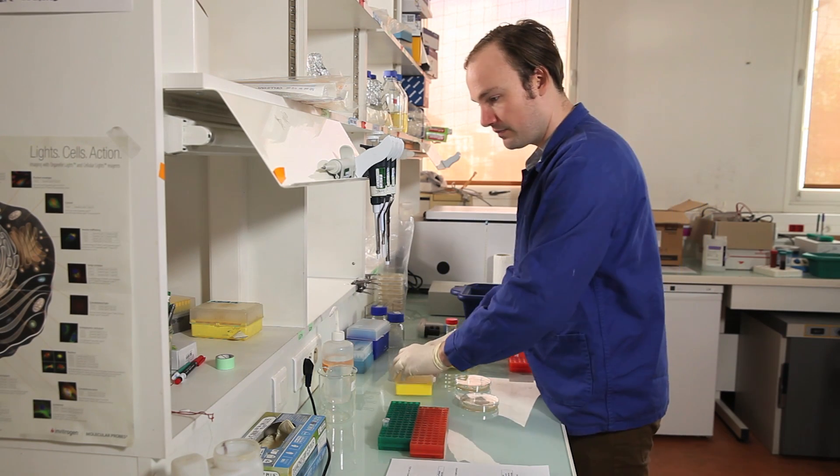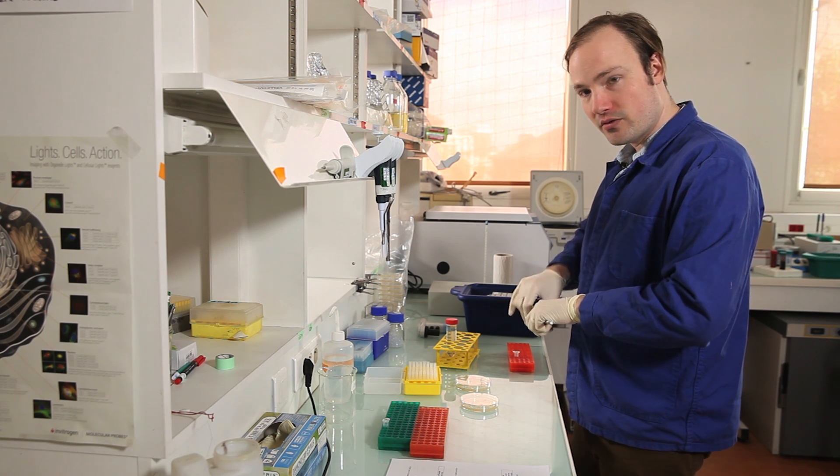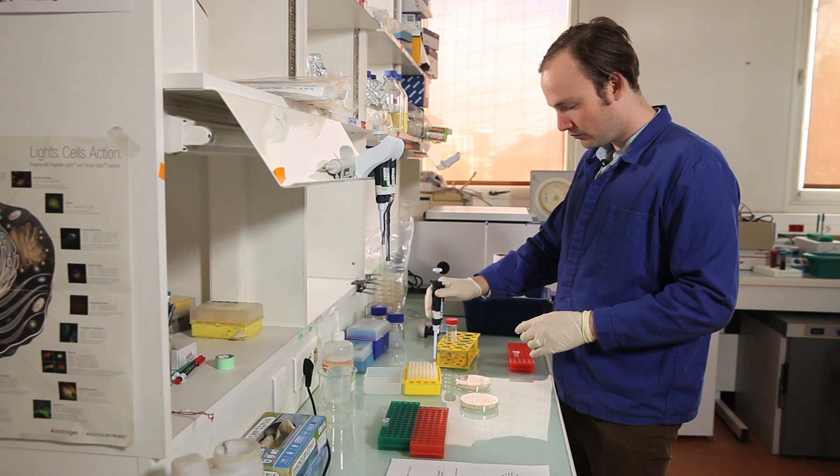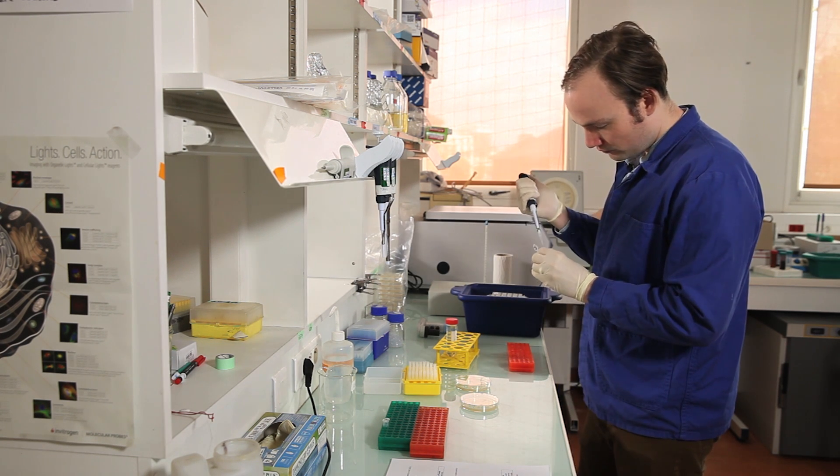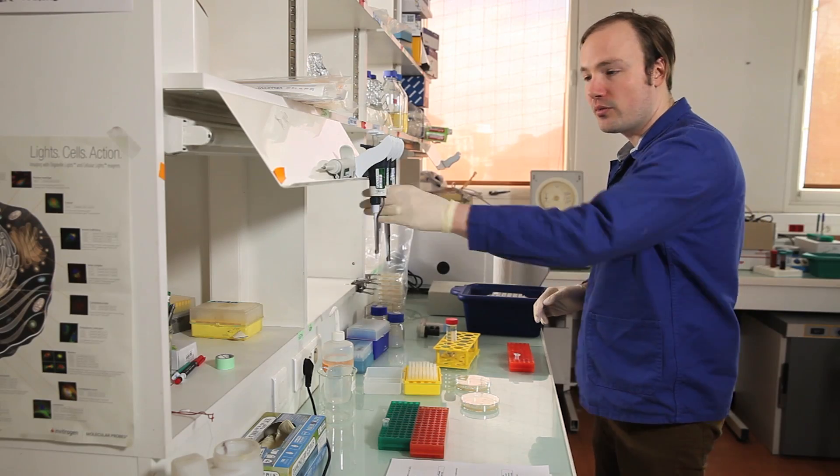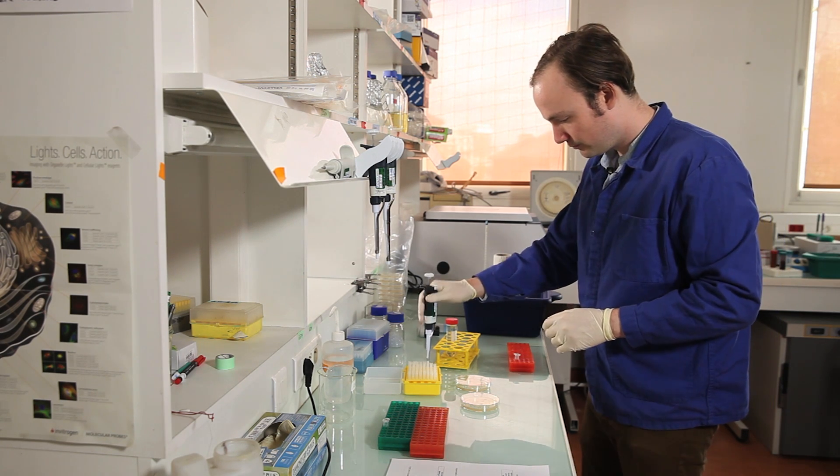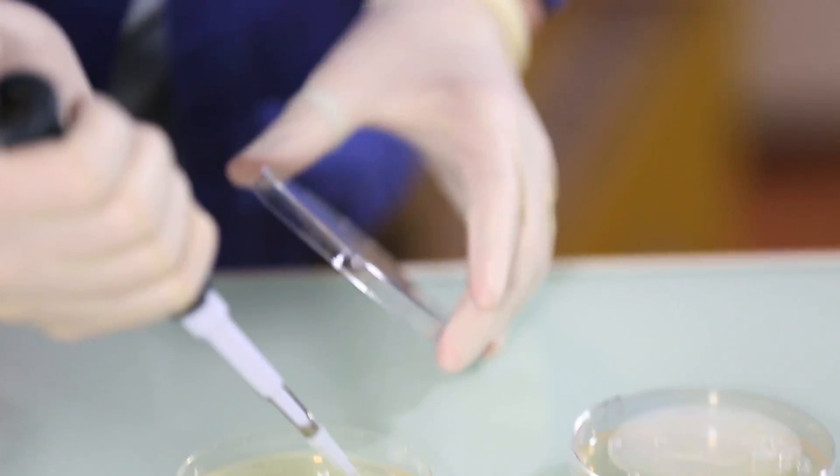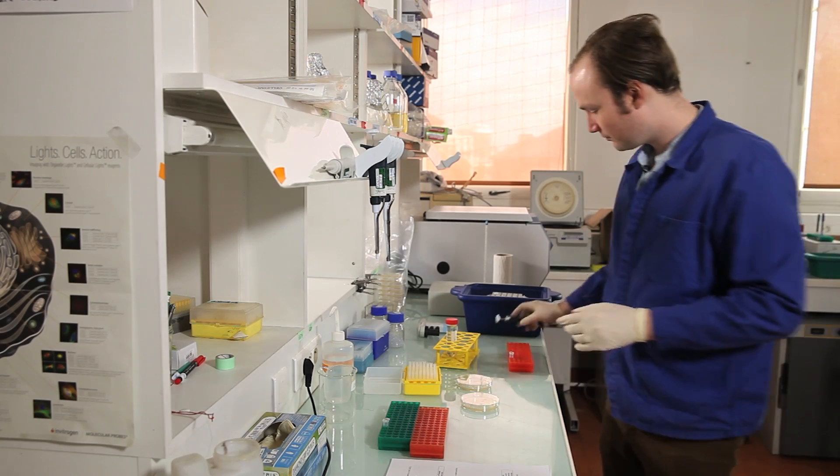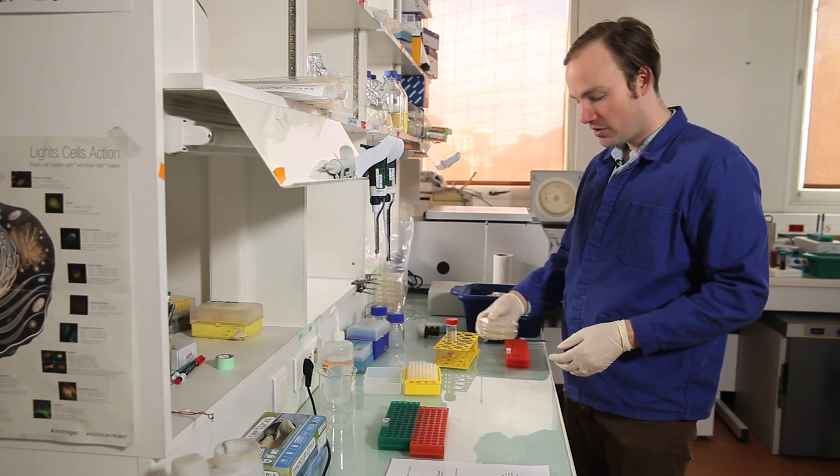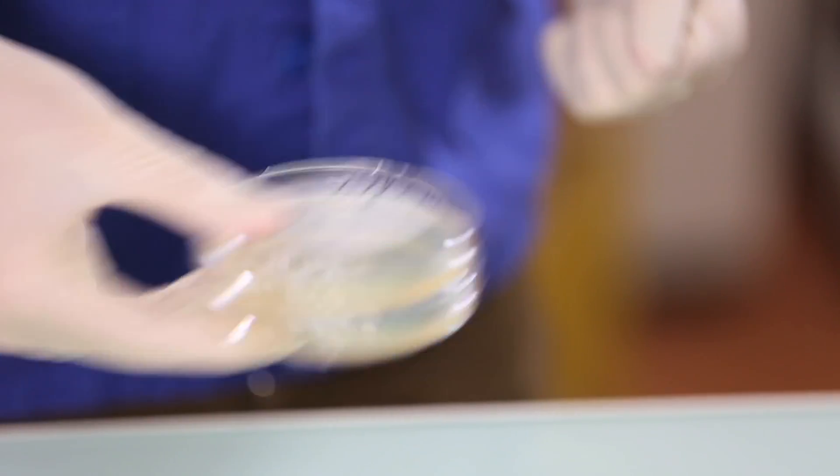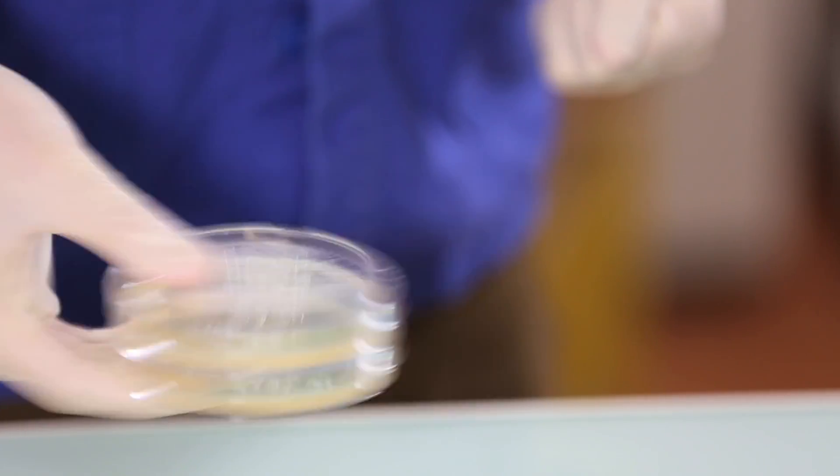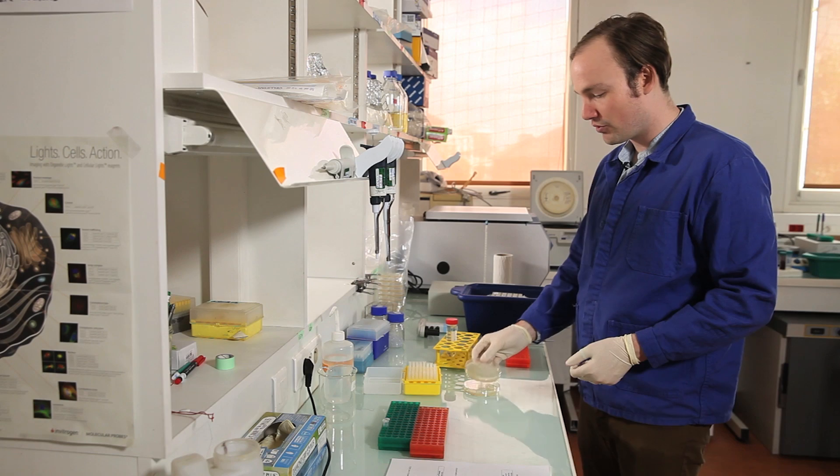Okay, so plate number one gets 200 microliters. And plate number two gets 20 microliters. Shake them, turn, turn, turn. Okay. And that's going to give us a beautifully even distribution of bacteria on our plates. Toss the beads.